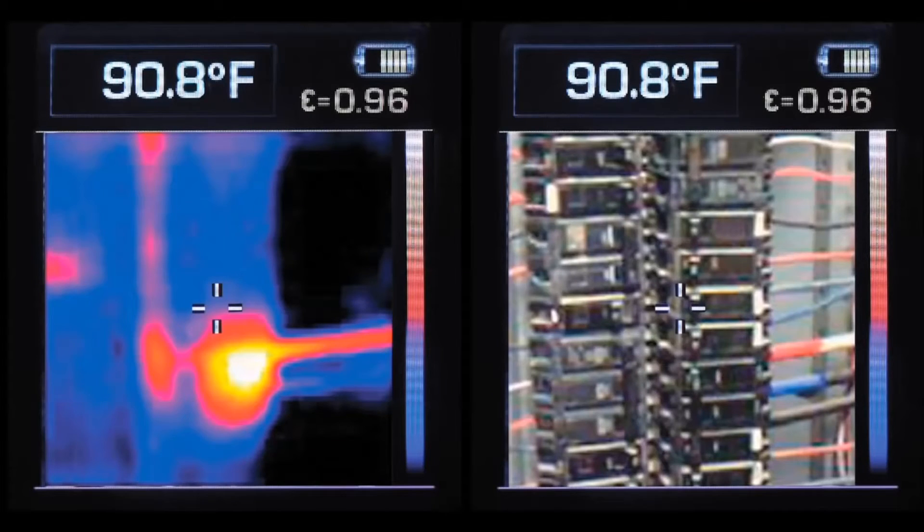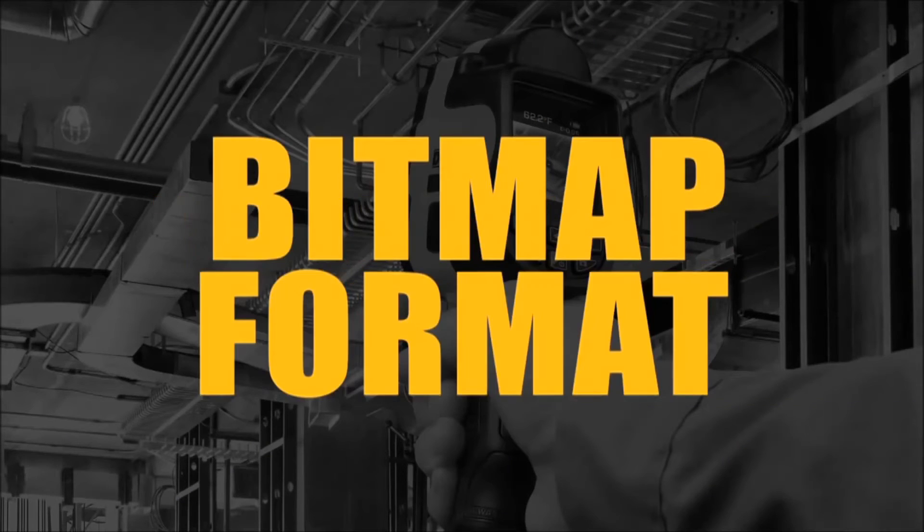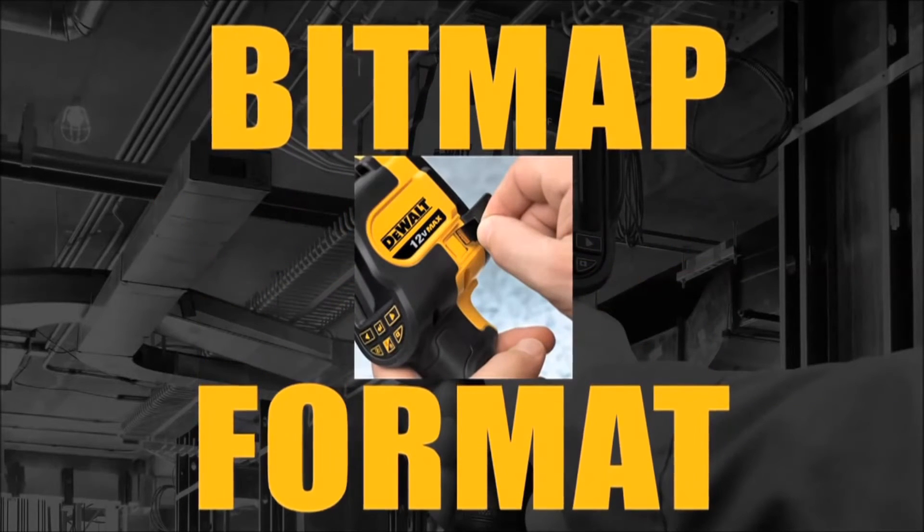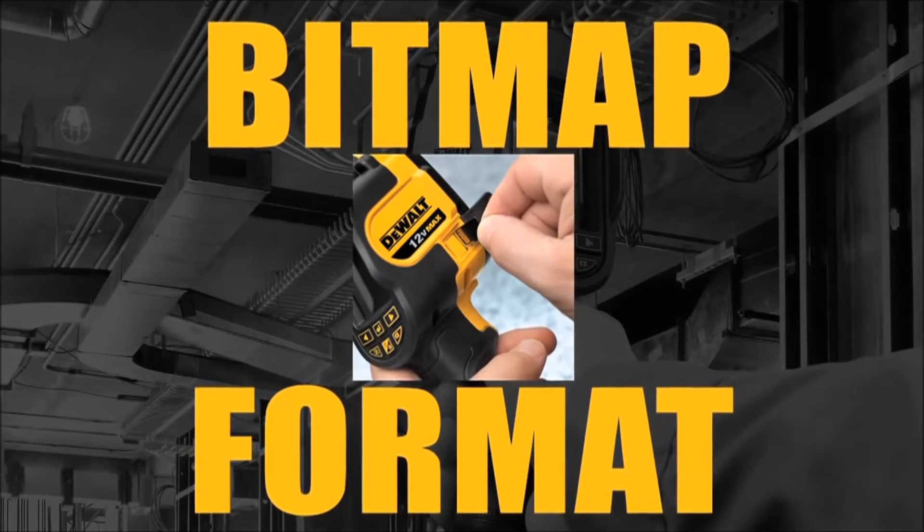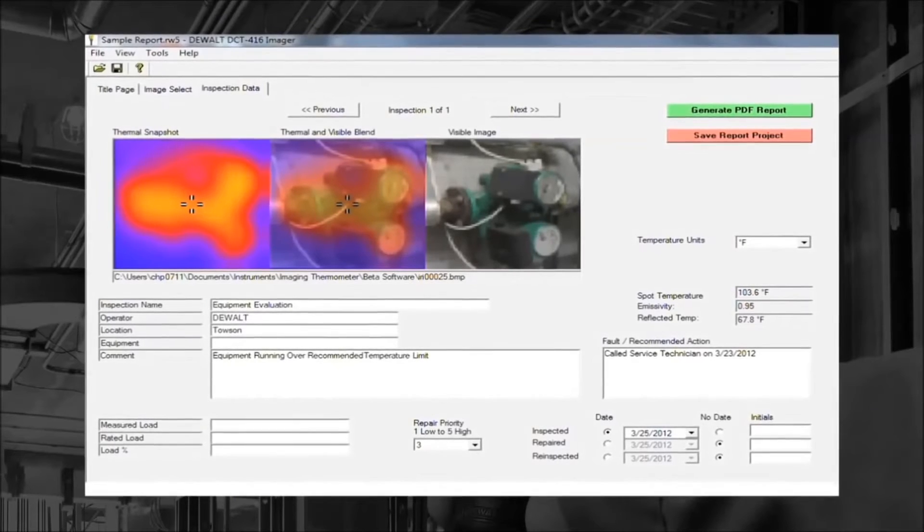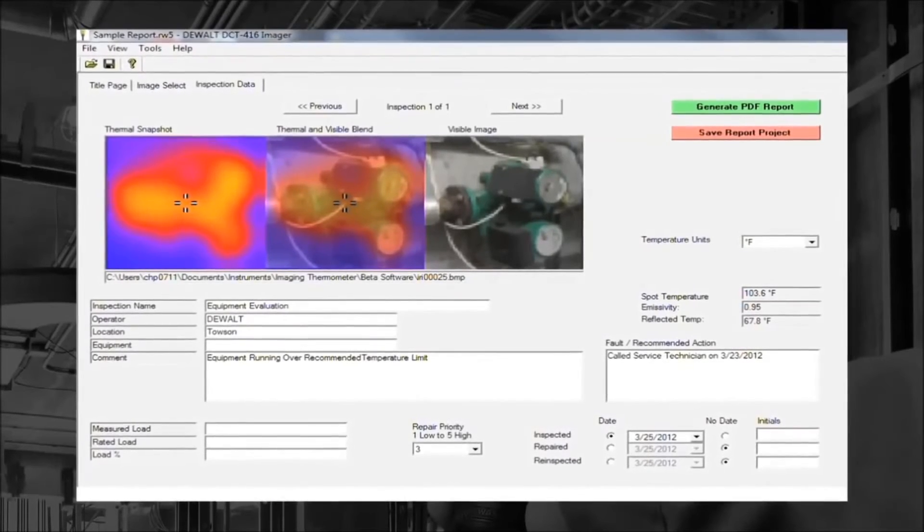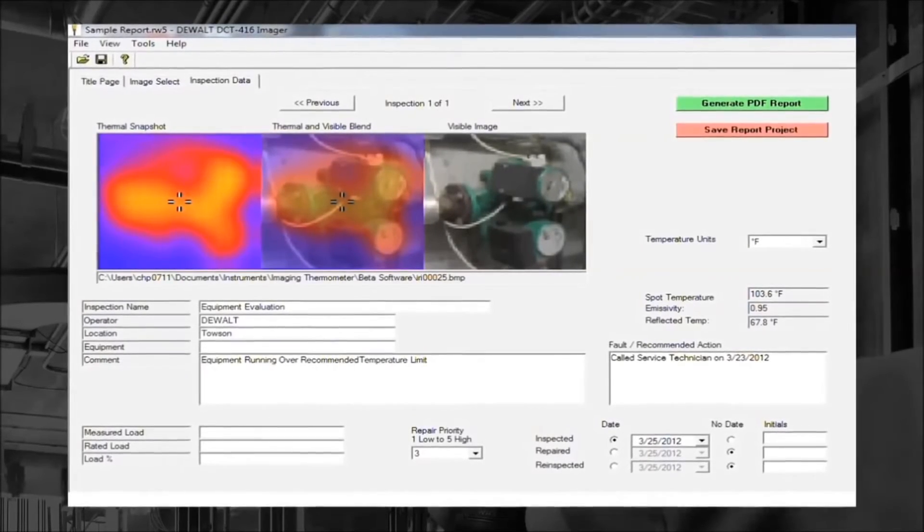When you choose to save a photo, the DCT416 automatically records both the thermal and visual images. The images are stored in bitmap format on the micro SD card, which allows you to transfer the card to a smartphone for emailing. You'll also receive software with the kit that includes report writing templates that import the saved images.